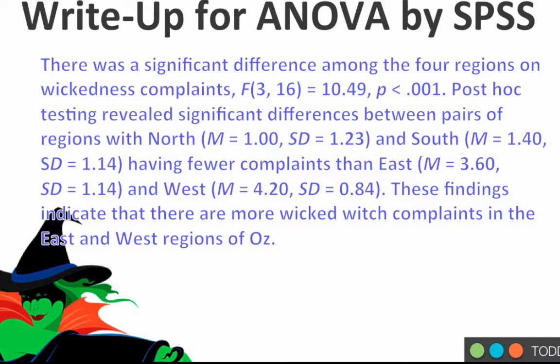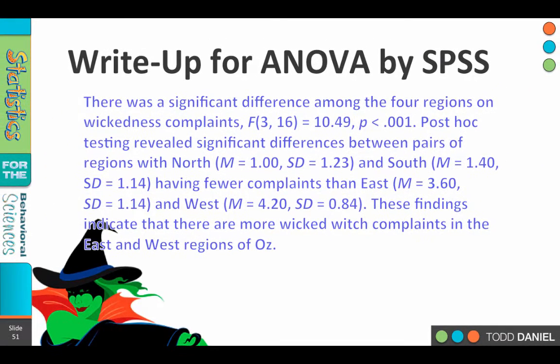The full write-up reads: There was a significant difference among the four regions on Wickedness complaints, F(3, 16) = 10.49, p < .001. Post-hoc testing revealed significant differences between pairs of regions, with north and south having fewer complaints than east and west. These findings indicate that there are more Wicked Witch complaints in the east and west regions of Oz — and if you're familiar with The Wizard of Oz, that will not come as a surprise. If you're not, you need to watch that movie.